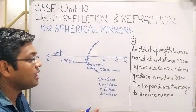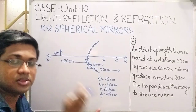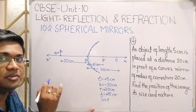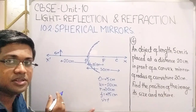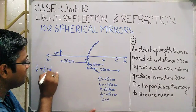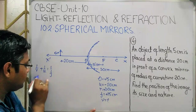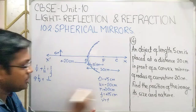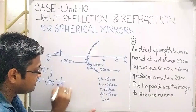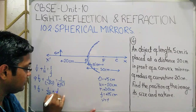We have to find where the image will be formed — that is, we need to find v. For finding v, we use the general mirror equation: 1 by v plus 1 by u equals 1 by f. Substituting: 1 by v plus 1 by u, where u is minus 20, equals 1 by f, where f is plus 15. So 1 by v equals 1 by 20 plus 1 by 15.